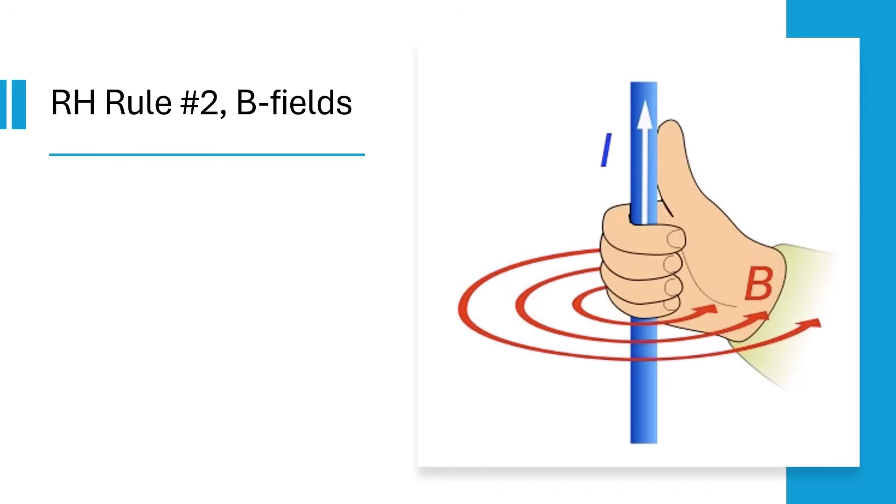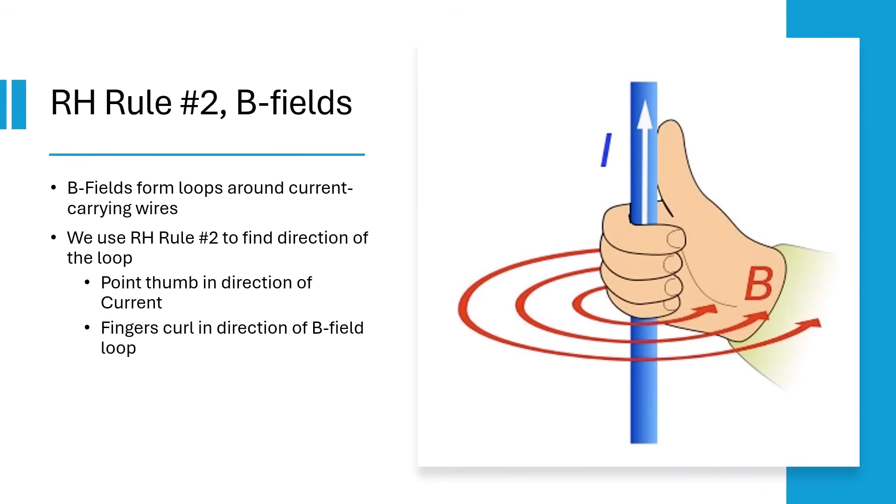So far B-field has just been this mysterious thing we need in order to calculate the force, but now let's talk about what it actually is. B-fields form loops around wires. The direction of the loop is found using right-hand rule number two. Point your thumb toward current and your fingers curl counterclockwise or clockwise, showing you the direction of the B-field loop.